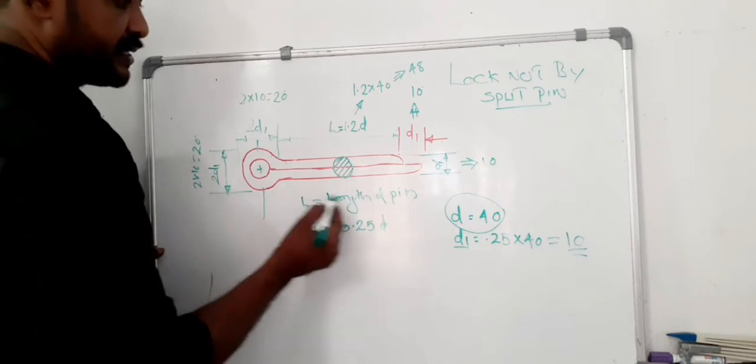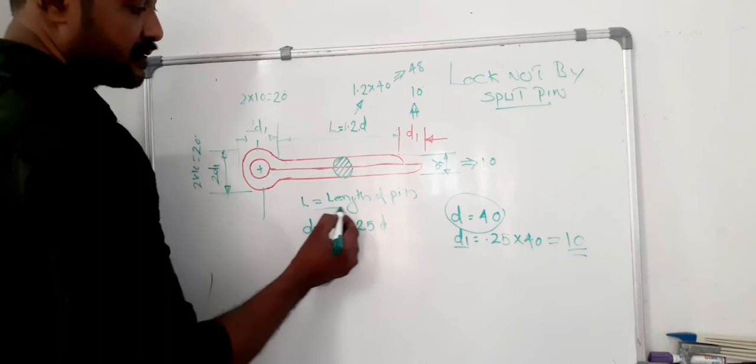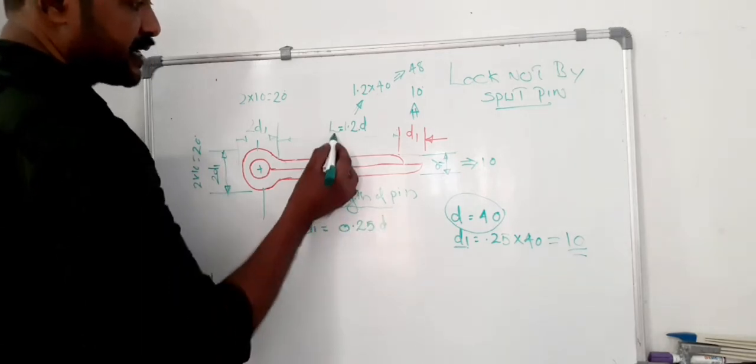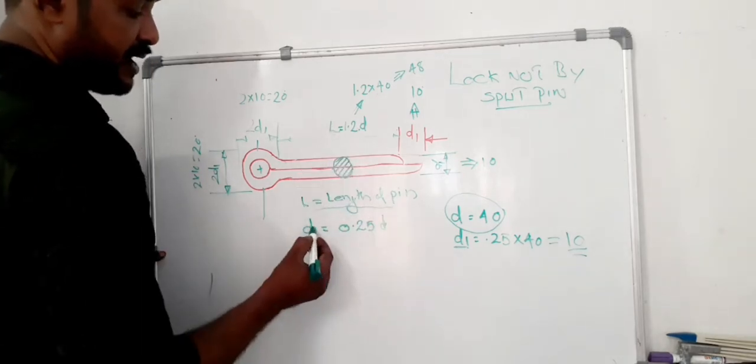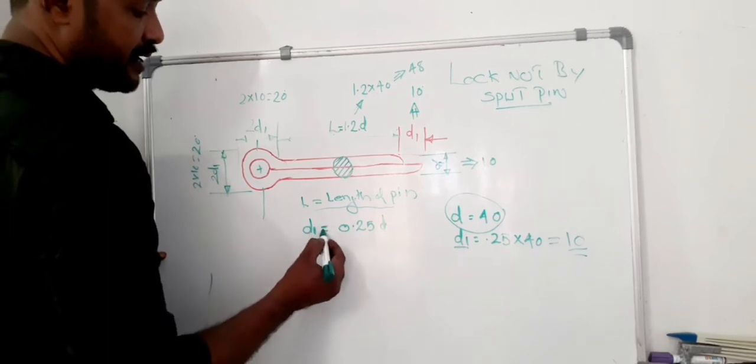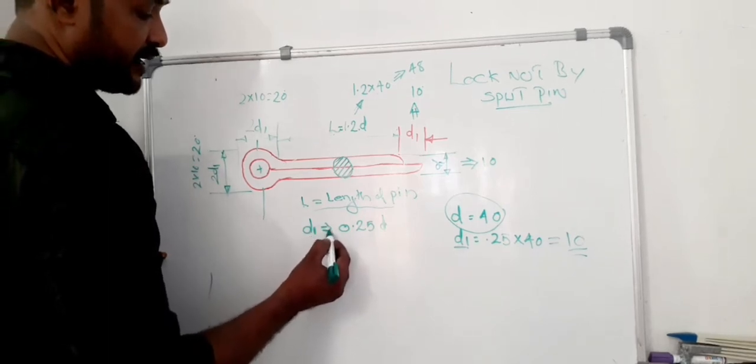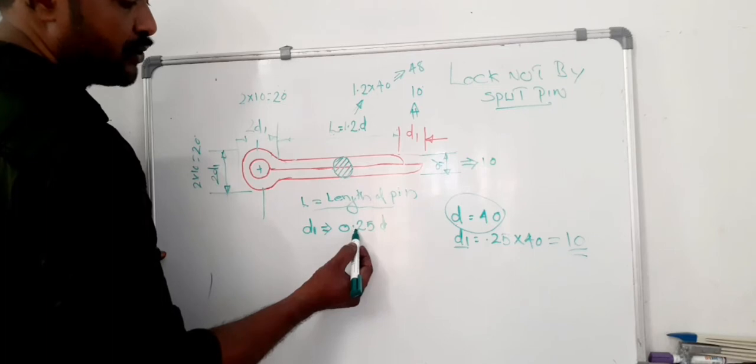From that, this length L is equal to length of the pin, and d1 has a value that is 0.25d.